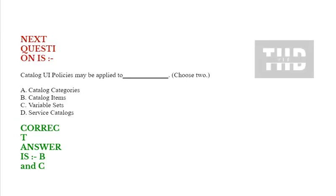Next question: Catalog UI policies may be applied to — choose two options. Option A: catalog categories. Option B: catalog items. Option C: variable sets. Option D: service catalogues. Correct answer is option B and option C.